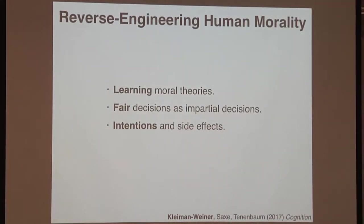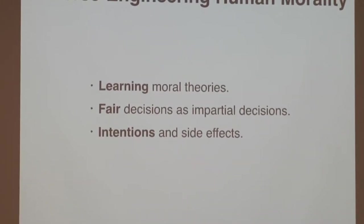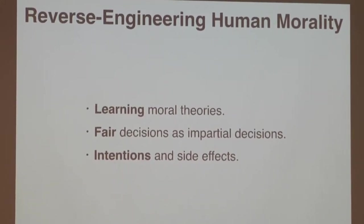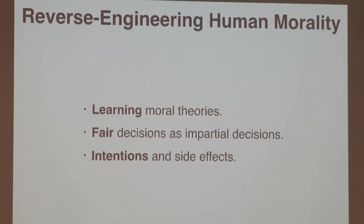So I'm going to tell you about three projects today. First, I'll talk about learning moral theories and how agents might learn in an effective way to make general moral decisions. I'll then talk about fairness — in particular, fairness as a kind of impartiality, how we make inferences about what others will think about us and anticipate those inferences to guide our notions of fairness in a dynamic and context-sensitive way. And finally, how we make inferences about intentions from sparse and noisy information, differentiating between intended impacts and side effects of our actions.